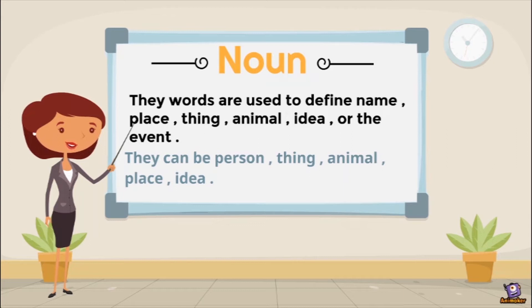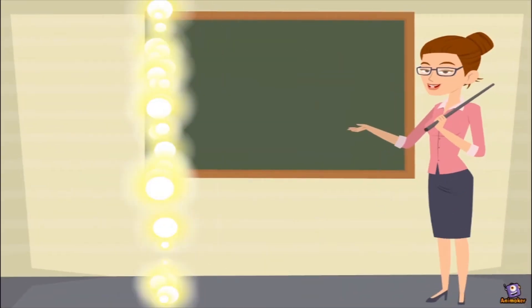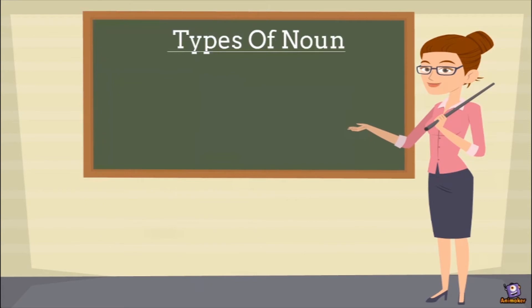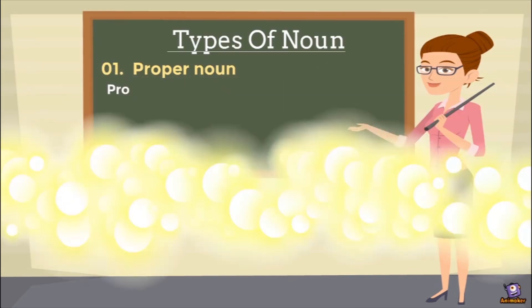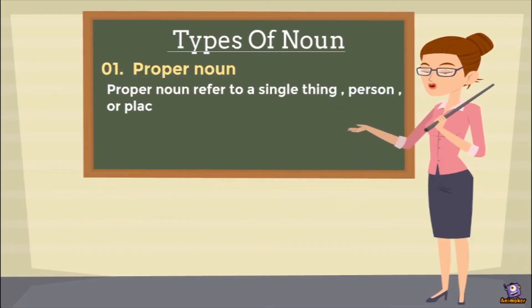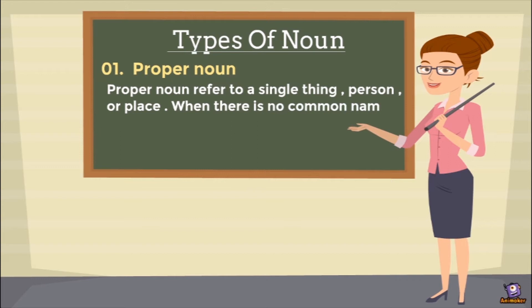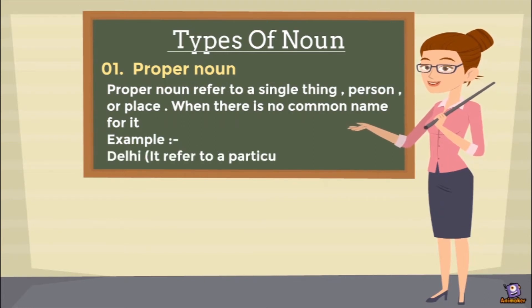Now we will move forward to know the types of nouns. The first type is proper noun. Proper noun refers to a single thing, person, or place when there is no common name for it — it is unique and not common. It is singular in the environment. For example, Delhi — it refers to a particular place; there is no other Delhi. Whatever is a singular thing in the environment, we call it a proper noun.